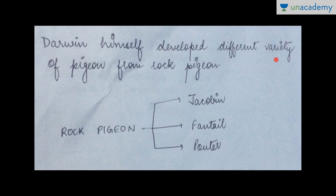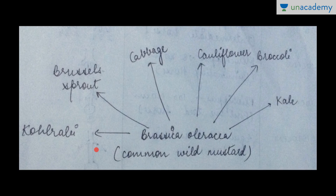Darwin himself developed different varieties of pigeon from rock pigeon — Jacobin, Fantail, and Pouter — as an example of artificial selection. Similarly, plant breeders developed different varieties from Brassica oleracea, the common wild mustard, including kale, broccoli, cauliflower, cabbage, Brussels sprout, and kohlrabi. Based on artificial selection, Darwin got the concept of natural selection.